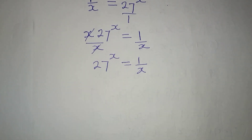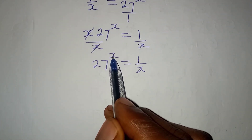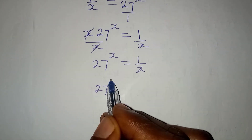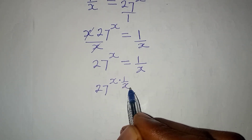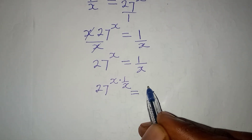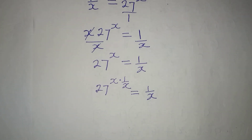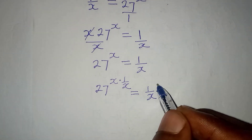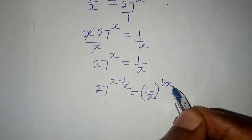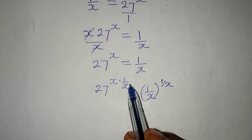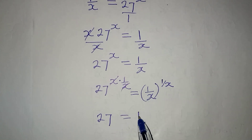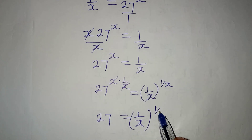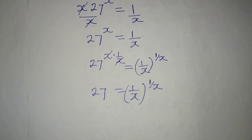Having done this, the next thing I'm going to do is try to remove x from the left-hand side completely. To do that, I will multiply the power here by 1 over x, so 27 to the power of x multiplied by 1 over x — this way I will eliminate the x. Since I introduced 1 over x on the left, I must bring it to the right-hand side as well, raised to the power of 1 over x. This cancels and we have 27 alone, equal to 1 over x to the power of 1 over x.